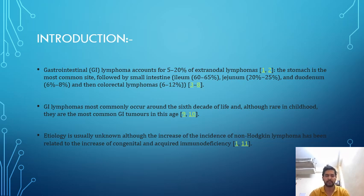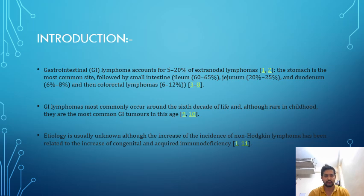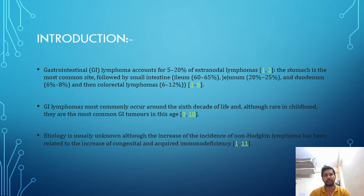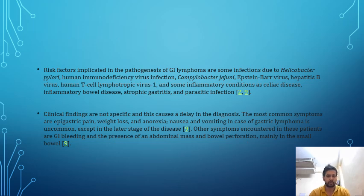In children they are rare, but represent the most common GI malignancies if they do occur. Etiology may be congenital or acquired, occurring due to some acquired deficiencies.